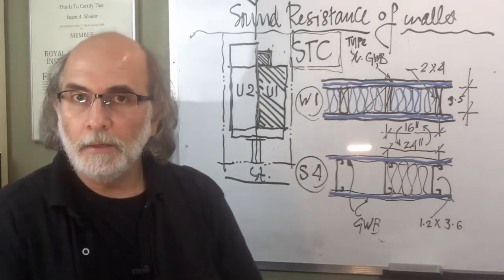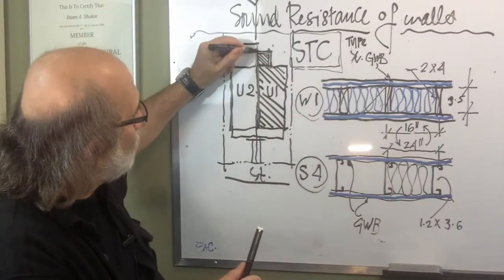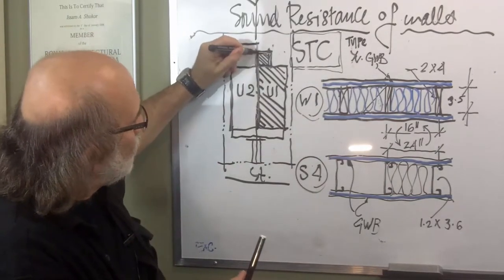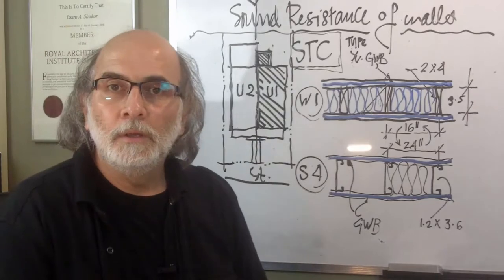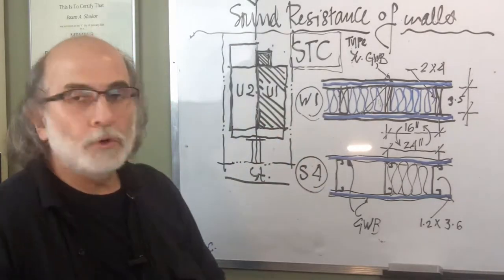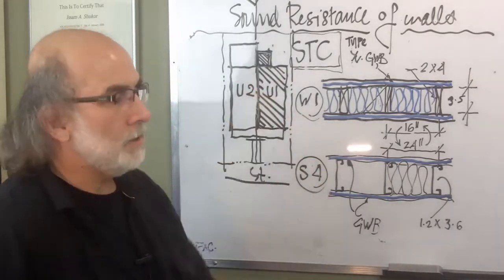So, what does the code say in terms of this application? How much would you have to provide at this point where you're really abutting the neighbor? In this case, the code requires 50 or over STC.